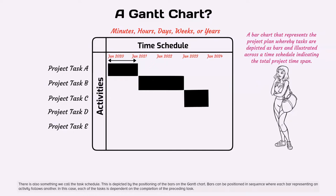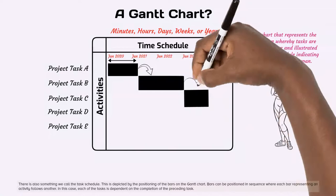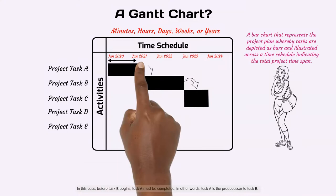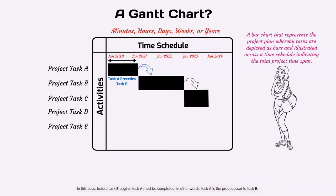There is also something we call the task schedule. This is depicted by the positioning of the bars on the Gantt chart. Bars can be positioned in sequence where each bar representing an activity follows another. In this case, each of the tasks is dependent on the completion of the preceding task. In this case, before task B begins, task A must be completed. In other words, task A is the predecessor to task B.